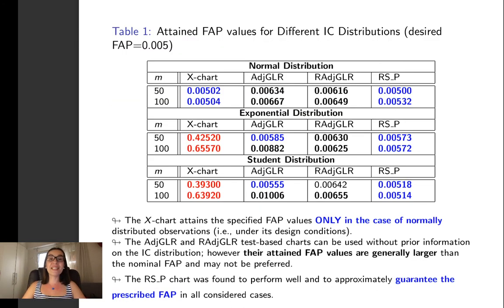Table 1 presents the results for different in-control distributions. Observe that the X-chart attains the specified false alarm probability values only under normality, which means under its design conditions, and only RSP technique succeeds to approximately guarantee the prescribed false alarm probability in all considered cases.